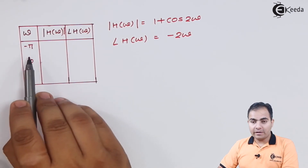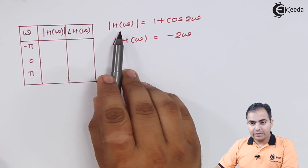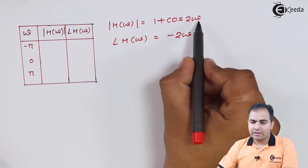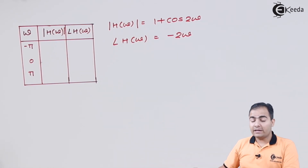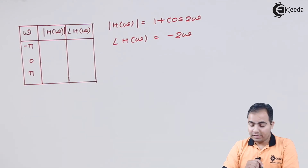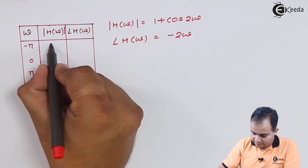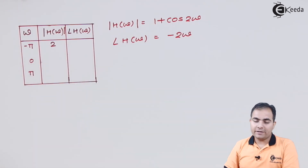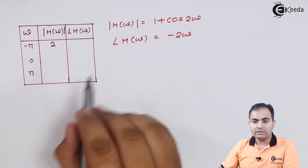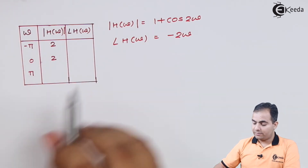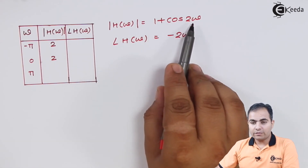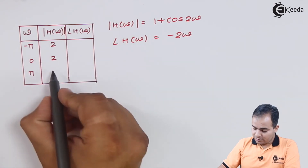I will substitute ω = −π, 0, and π into the magnitude response formula. For ω = −π: cos(−2π) = cos(2π) = 1, so 1 + 1 = 2. For ω = 0: cos(0) = 1, so 1 + 1 = 2. For ω = π: cos(2π) = 1, so 1 + 1 = 2. The magnitude response is constant at 2 for all three values.